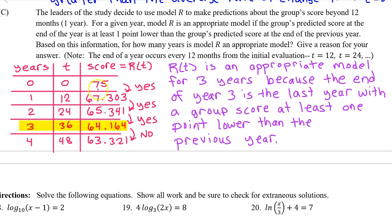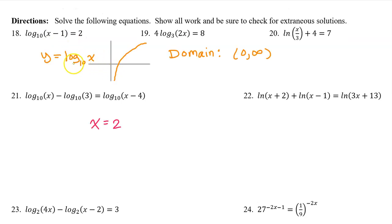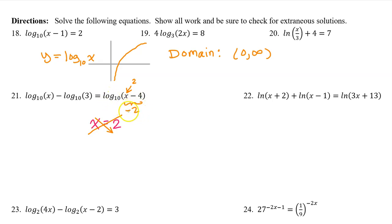Including the chart is part of your answer. Solve the following equations — show all work and be sure to check for extraneous solutions, that is, apparent solutions that don't actually work when plugged back in. The graph of a log parent function has a domain from 0 to infinity, not including 0 itself. So for example, if you got a solution of x=2 for number 21, that would be extraneous, because plugging in 2 gives log base 10 of a negative 2, which is undefined.